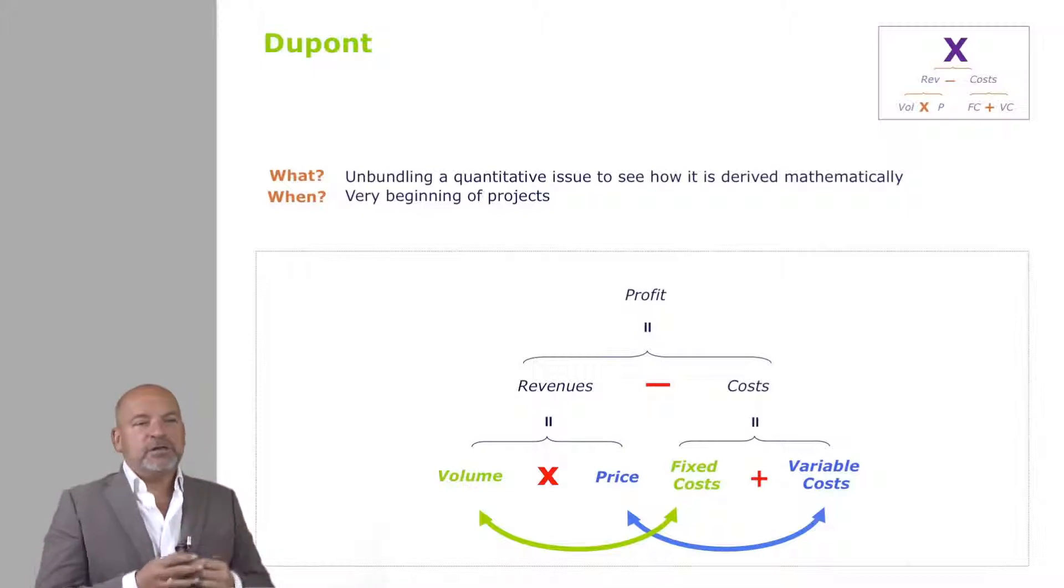At one extreme, for example, if you think about a company whose costs are entirely fixed, think about software. Software or pharmaceuticals is a bit excessive, but software, the first version of the software costs you a lot. The second version of the software has a marginal cost, a variable cost that's close to zero. And therefore, in software, what you try and achieve is as much volume as possible.